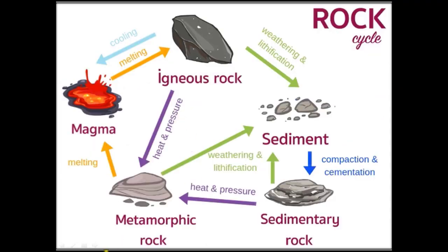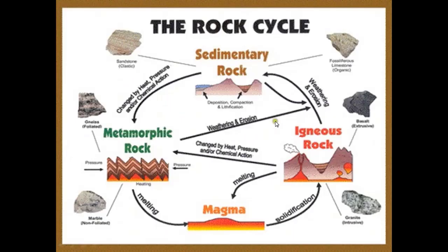In another diagram, you can see the formation of rock in more detail. From igneous rock, after weathering and lithification, you get sediment. Compaction and cementation of that sediment gives you sedimentary rock. When sedimentary rock is heated under pressure, you get metamorphic rock. From igneous rock, heat and pressure also gives metamorphic rock. This metamorphic rock melts into magma, which cools to give igneous rock again.